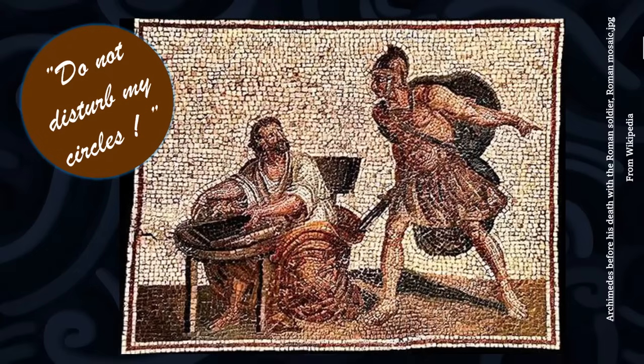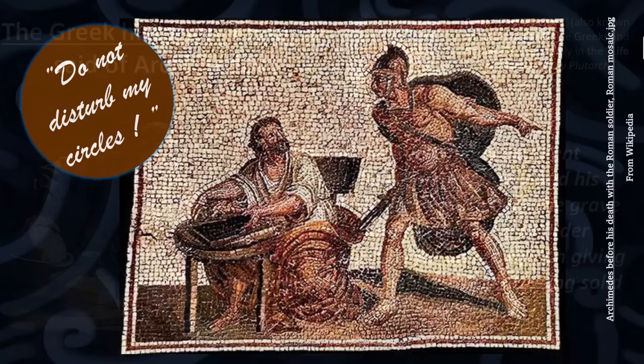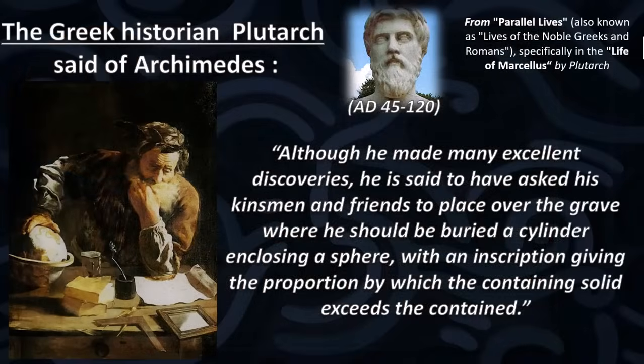Now this soldier they said killed Archimedes, which was against the orders of Marcellus, which were that Archimedes was not to be harmed. The Greek historian Plutarch said of Archimedes: Although he made many excellent discoveries, he is said to have asked his kinsmen and friends to place over the grave where he should be buried a cylinder enclosing a sphere, with an inscription giving the proportion by which the containing solid exceeds the contained.